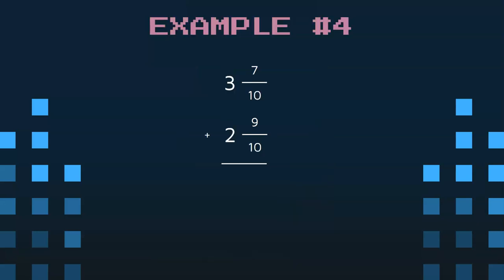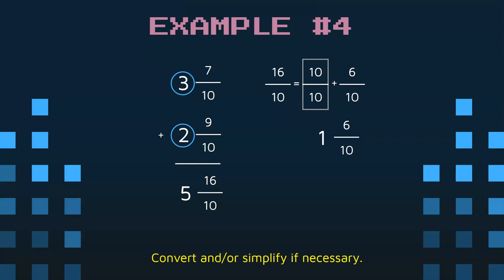Example 4. So now we're going to add. So we're going to add the numerators. That gives us 16. We're going to keep the denominator as 10. We're going to add the whole numbers. And of course, we're going to ask ourselves, can we convert and simplify?